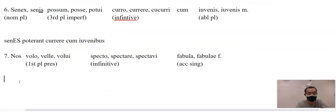The last one, nos is we, nos, it's going to stay the same. This one's going to be volumus because mus is the ending for nos, we. Spectare, fabulam, because that's a first declension with the A-E.